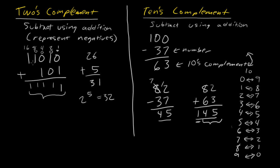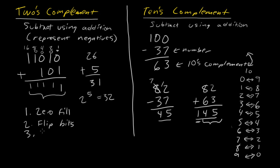Now, to subtract 5 from 26, we need to take the 2's complement of 5. The steps are: first, zero fill; second, flip the bits; and third, add one.